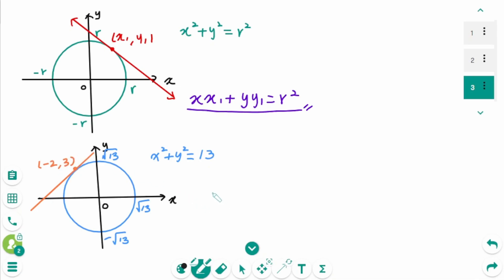Then the equation of the tangent line is minus 2x plus 3y equals 13. This is the answer.